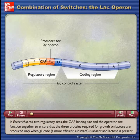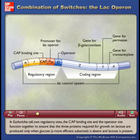In Escherichia coli, two regulatory sites, the CAP binding site and the operator site, function together to ensure that the three proteins required for growth on lactose are produced only when glucose, a more efficient substrate, is absent and lactose is present.